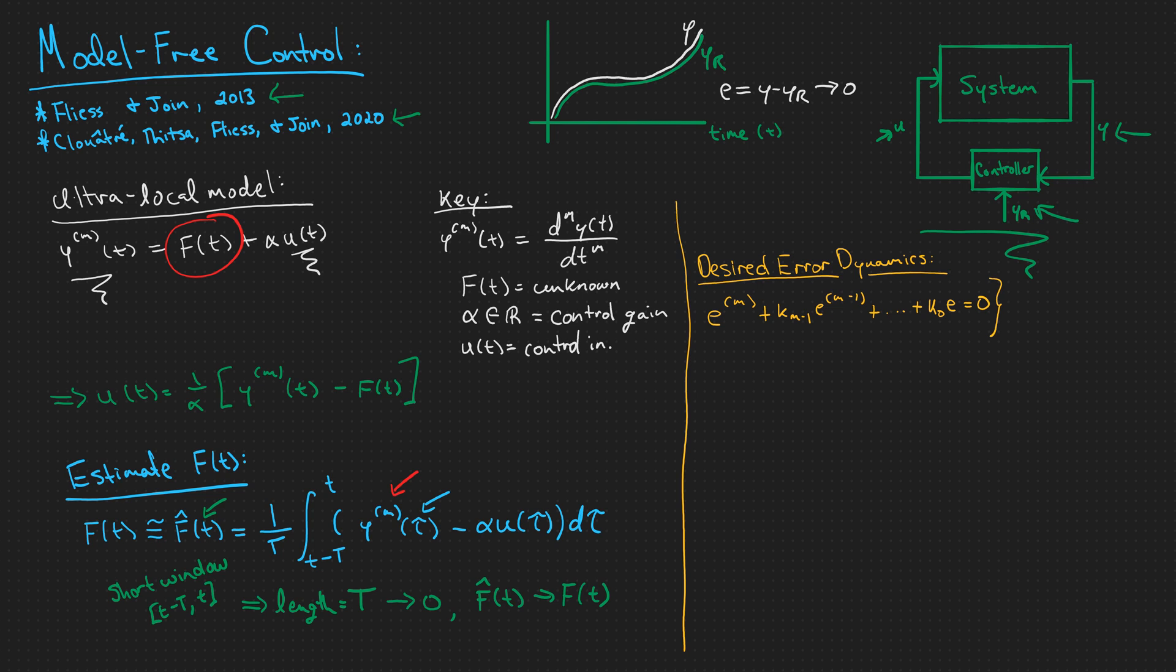Up until now, we have estimated f of t so that we can better design a controller. However, we haven't really used the fact that we want the error between our output and the reference trajectory to go to 0. That is where we think back to a class such as classical controls or linear control theory and think about the type of error dynamics that we would want.